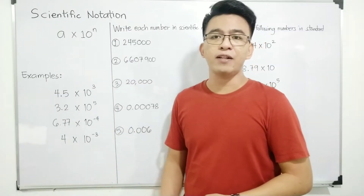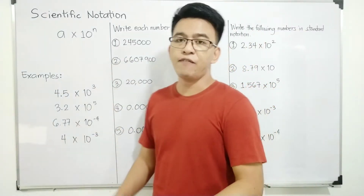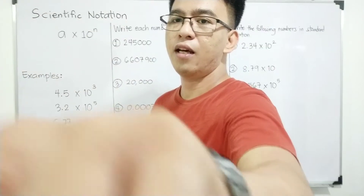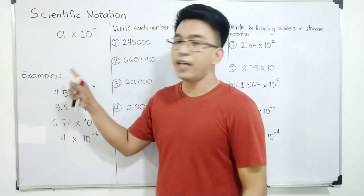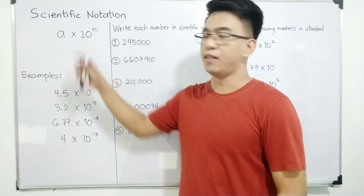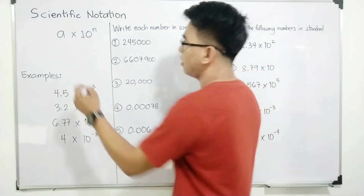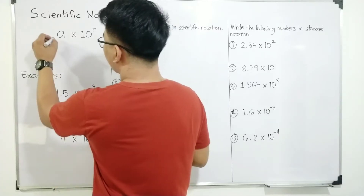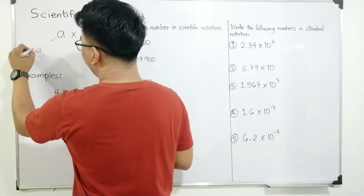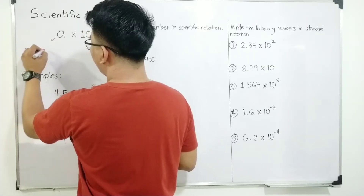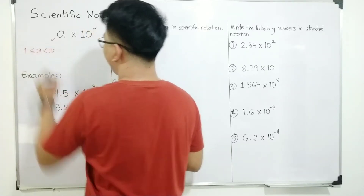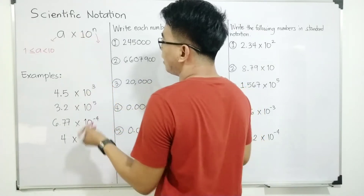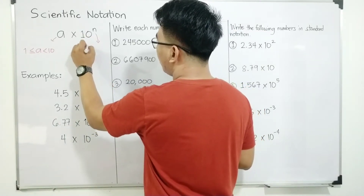So we have here the scientific notation, which is: a times 10 raised to n. Your 'a' here is a number where it is greater than or equal to 1 but less than 10. And your 'n' here is an integer.